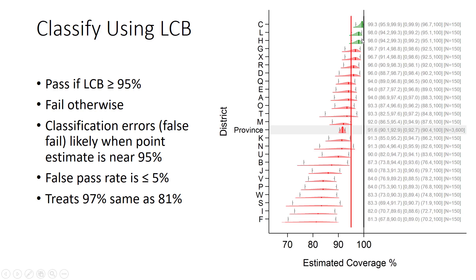Here we're going to say you pass if the one-sided lower bound is at 95% or above. In this case, we see that fewer strata pass, but we're very confident about those classifications. We're very unlikely to have a false pass here.